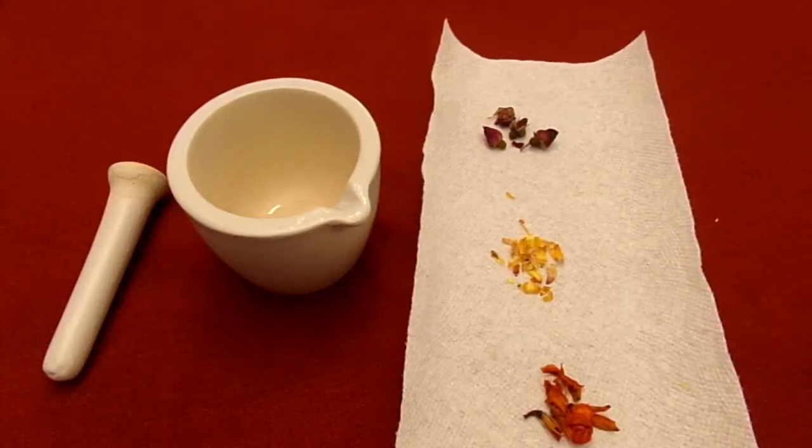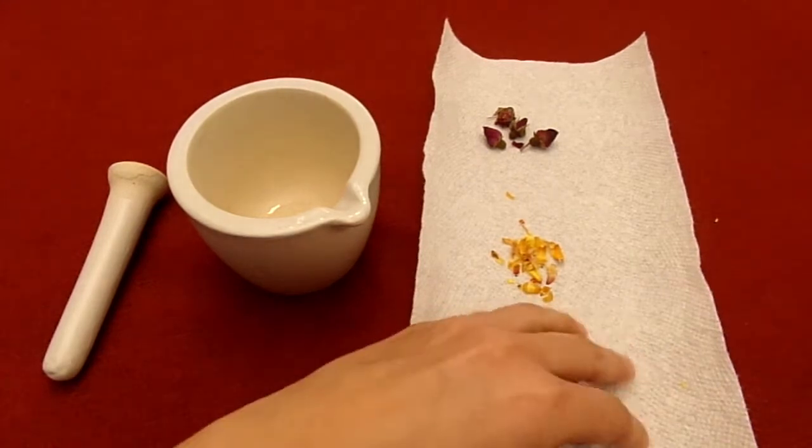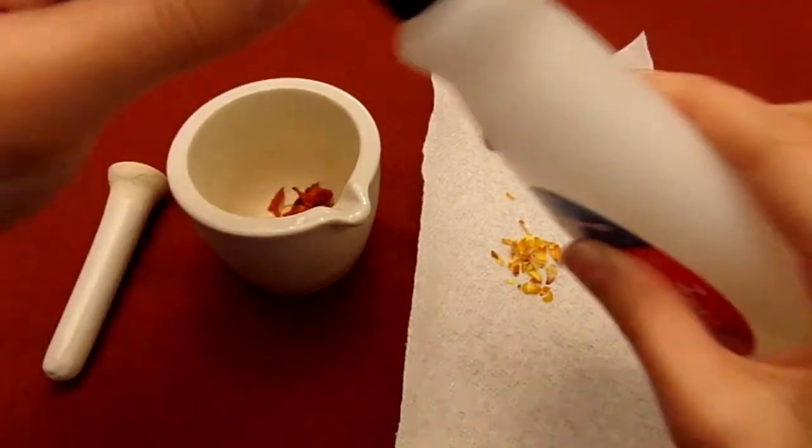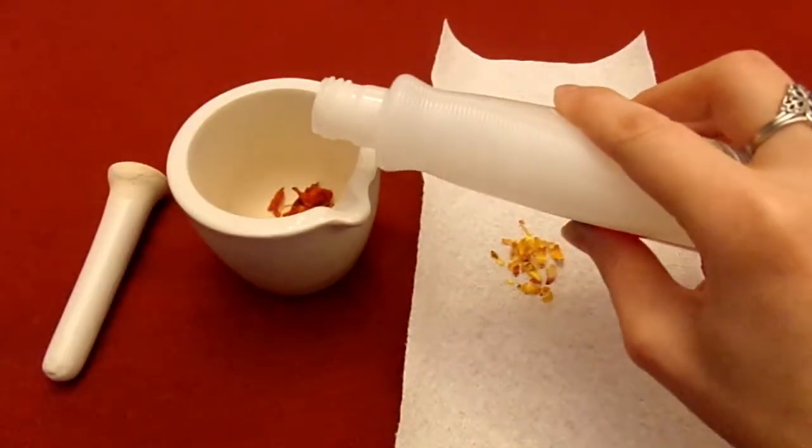Once you've separated your three types of flowers, take all of one type of flower and put it into the mortar. Then add some acetone. Add just enough to cover the tops of the flowers.